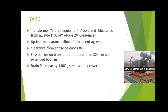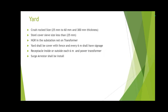The fire barrier is installed not less than 300 mm and can be extended up to 600 mm. For the drain pit of an oil transformer, the drain pit capacity is 110%, covered by a steel grating cover with hole size up to 25 mm — if larger, the crushed rocks used there could fall into the pit. NGR is inside the substation, not on the transformer. The yard shall be covered with a fence, and every 6 meters there must be a signage — this is a very important question.